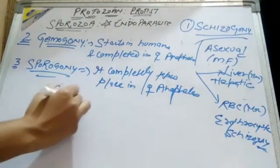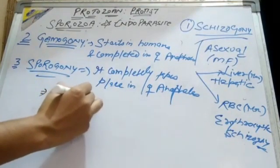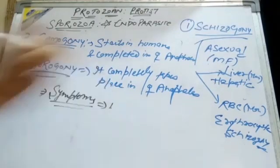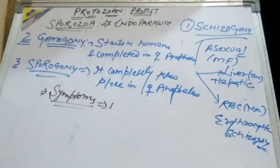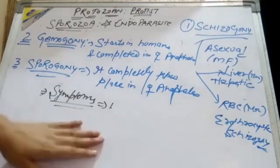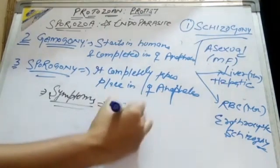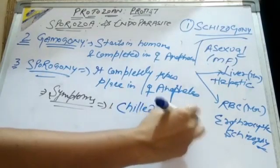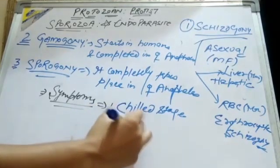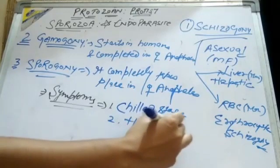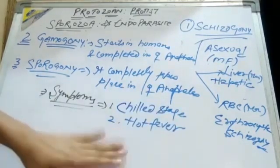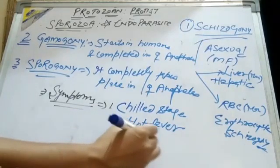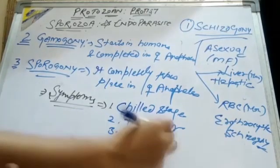Now let's discuss the symptoms of malaria. The symptoms of malaria occur in three stages. The first stage is the chill stage. The second stage is hot fever or high fever. And the third stage is sweating.